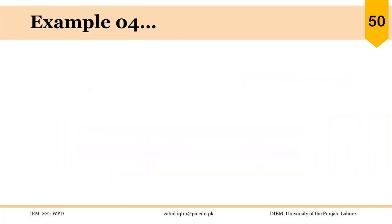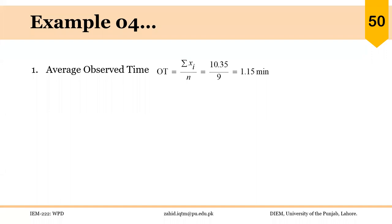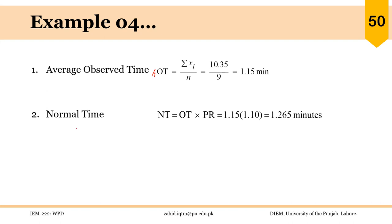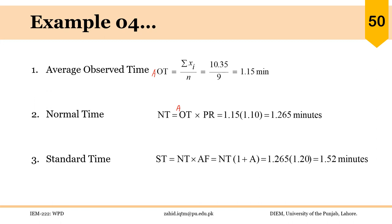So 10.35 divided by 9 gives us the average observed time of 1.15 minutes. Normal time is average observed time multiplied by performance rating: 1.15 multiplied by 1.10, a rating of 110%, gives a normal time of 1.265. Standard time equals normal time multiplied by (1 + allowance), so with a = 20%, the standard time turns out to be 1.52 minutes — the time an average qualified worker should take to perform this task once.